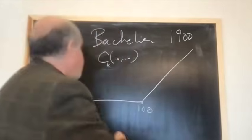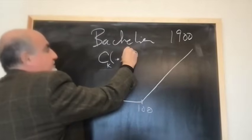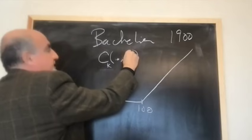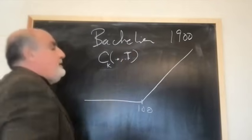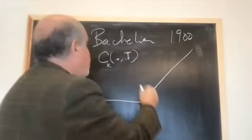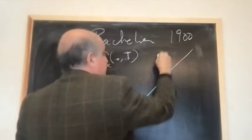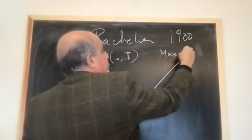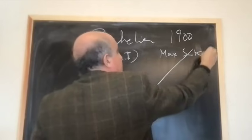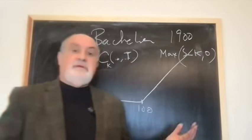Call is simply the payoff at, well, we have expiration date, let's say, cap T. And the payoff is going to be at cap T of max S minus K to zero. Simply, let's see option price.